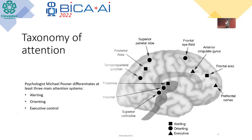In the research of attention, we have a lot of taxonomies. In this case, we use the taxonomy proposed by Michael Posner that differentiates at least three main attention systems: alerting, orienting, and executive control. In that image, we can see the brain and some areas that are involved in these functions.